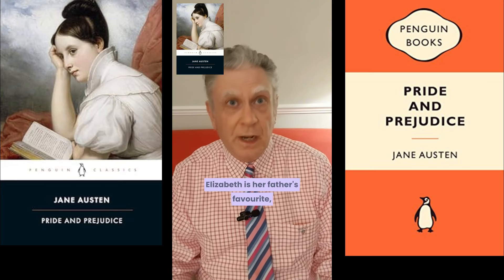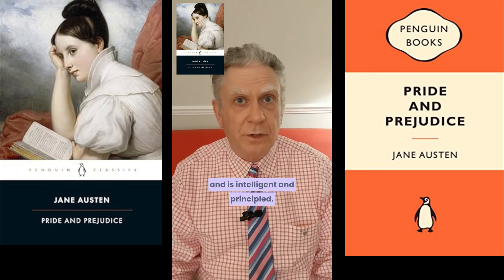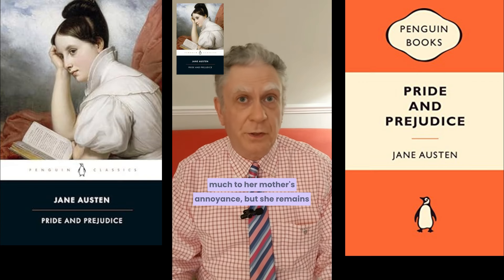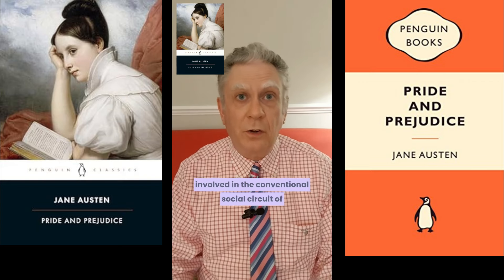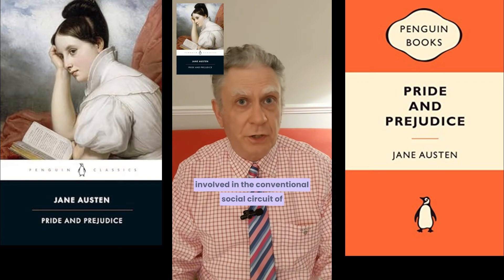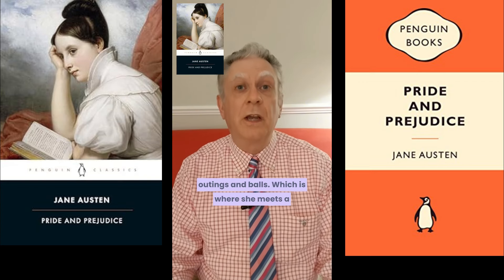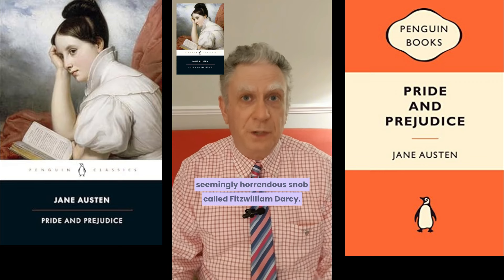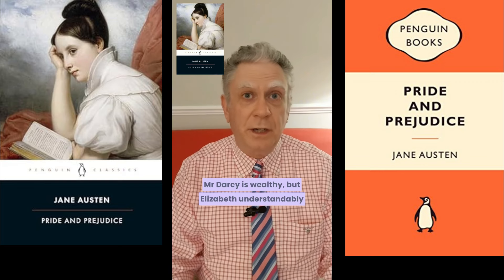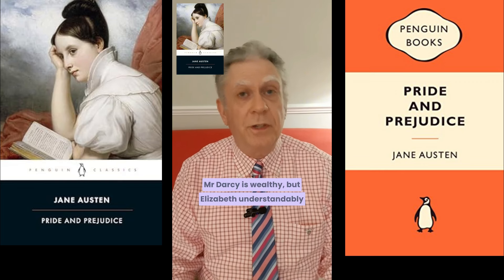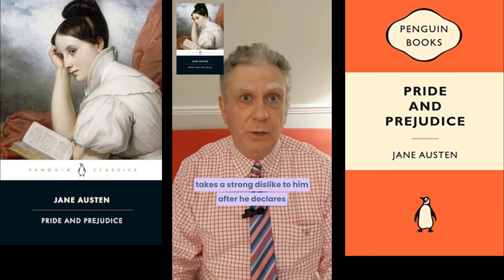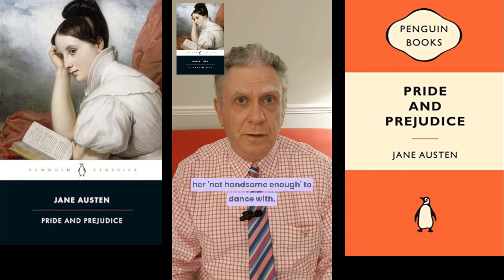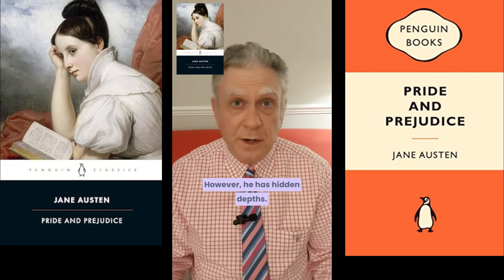The novel focuses on the second oldest daughter Elizabeth. She is her father's favourite and is intelligent and principled. She refuses a marriage proposal from a clergyman, much to her mother's annoyance, but she remains involved in the conventional social circuit of outings and balls, which is where she meets a seemingly horrendous snob called Fitzwilliam Darcy. Mr. Darcy is wealthy, but Elizabeth understandably takes a strong dislike to him after he declares her not handsome enough to dance with. However, he has hidden depths.